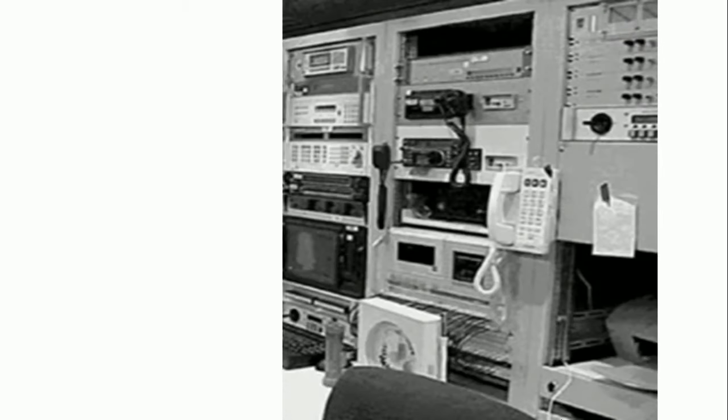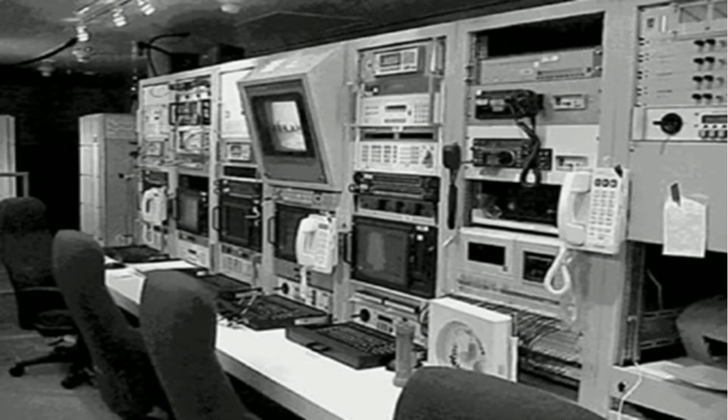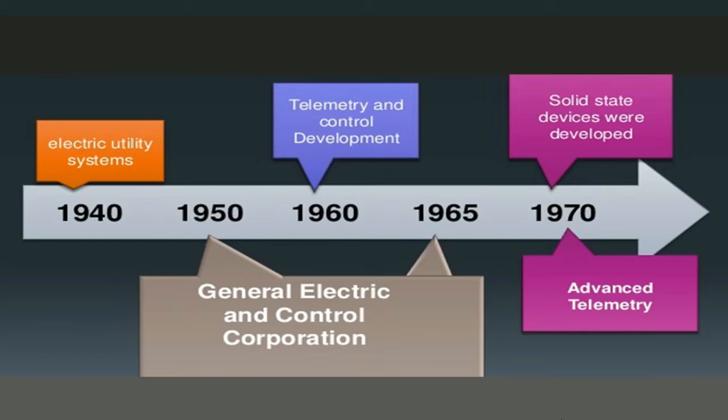The history of SCADA: SCADA systems grew out of the telemetry systems developed for the space programs. At that time, everything was analog, not digital. With the development of microprocessors and integrated circuits, microprocessor-based digital telemetry systems were developed. They could multiplex data and provide all the information. At the same time, radio telemetry was being used for supervisory control and data acquisition, and thus the modern SCADA was born.